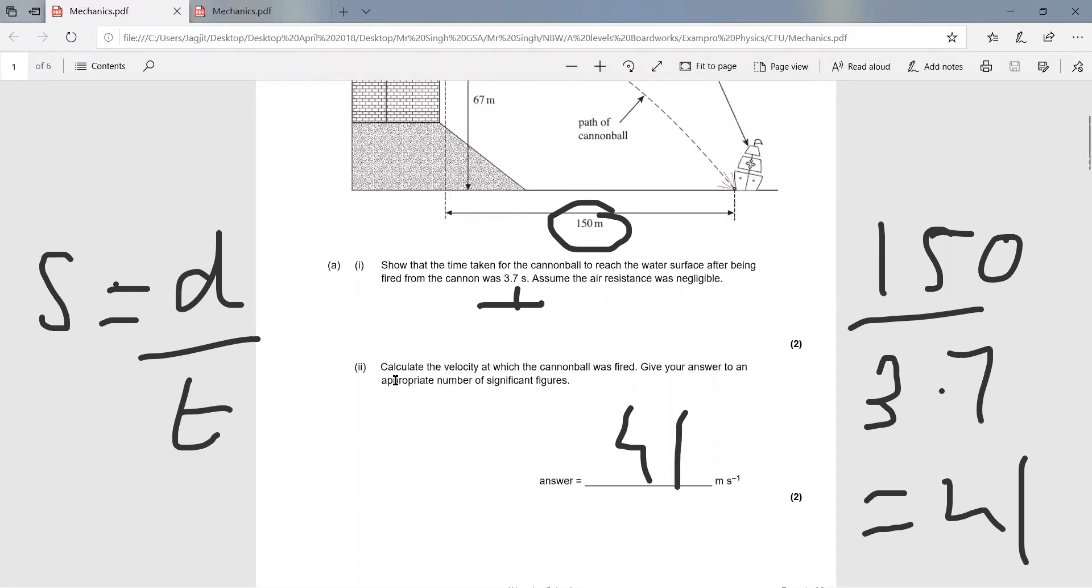When it comes to finding the horizontal component, there's only one equation: velocity equals displacement over time. Just plug the values in. We know the horizontal distance is 150 meters, we've calculated the time from the previous question. Plug the values in the calculator and your answer is 41 meters per second.